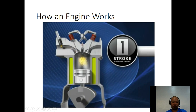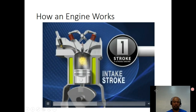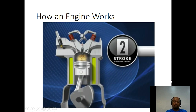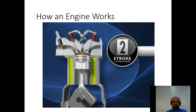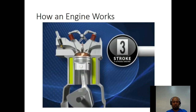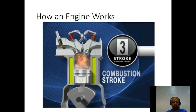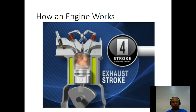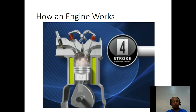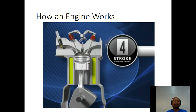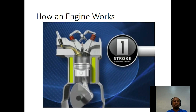This is called the intake stroke. On the second stroke, the piston travels upward, compressing the air and fuel to make a highly combustible mixture — this is called the compression stroke. At this point, the spark plug fires, sending the piston downward from the expansion of the air and gas mixture. This is the combustion stroke. The fourth stroke is the exhaust stroke: as the piston travels upward, the exhaust valve opens to release the burned air-fuel mixture.